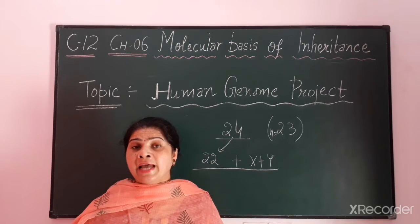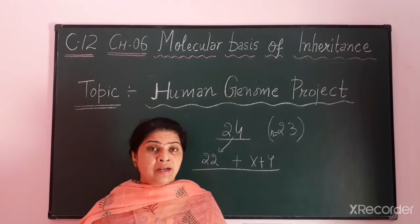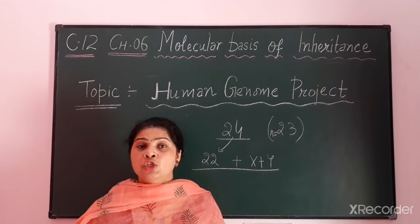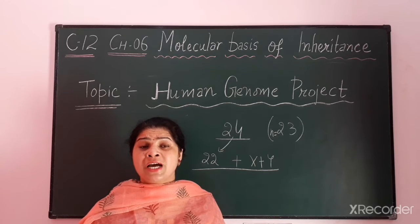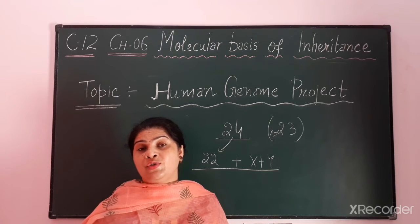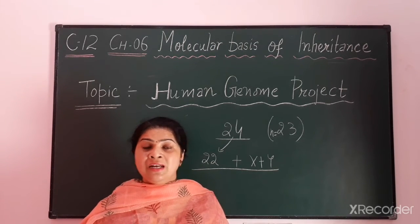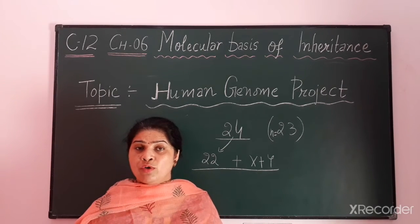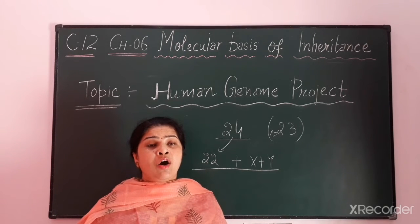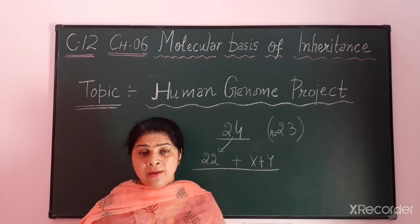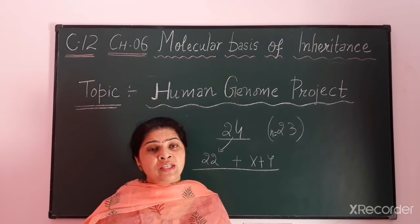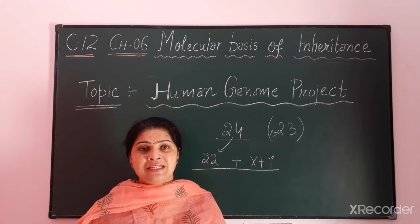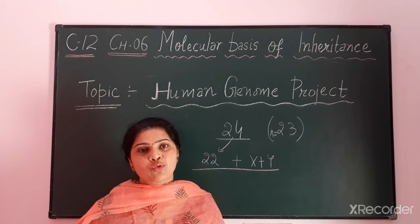Therefore, in the year 1990, this project was started by the US, and later many other countries joined. This project was a 13-year effort of scientists. It was expected to be completed in 2001 but was completed on 6th May 2003, with the last chromosome sequenced in the year 2006. Let us now study this Human Genome Project in detail.